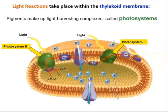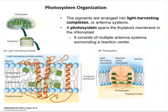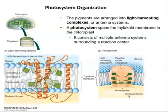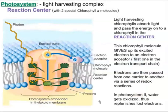Photosystems are basically light-harvesting complexes because they have pigments within them — they act like little antennas to capture light. Besides pigments, there are embedded proteins, so a photosystem is a protein complex with pigments. One very important part of each photosystem is the reaction center, where the special pair of chlorophyll molecules receives energy passed down from adjacent chlorophyll molecules.